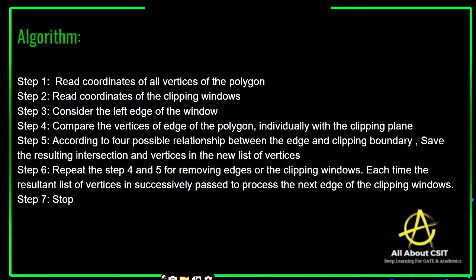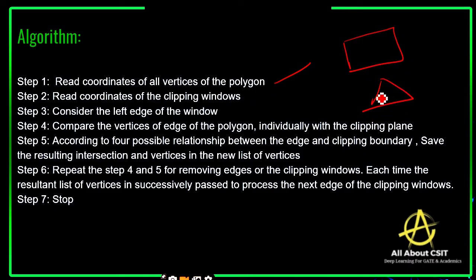Now let's see the algorithm to get clarity on how we clip the polygon. First, read the coordinates of all vertices of the polygon. Second, read the coordinates of the clipping window — whatever shape the clipping window is. For example, if the clipping window has four coordinates, read all four.